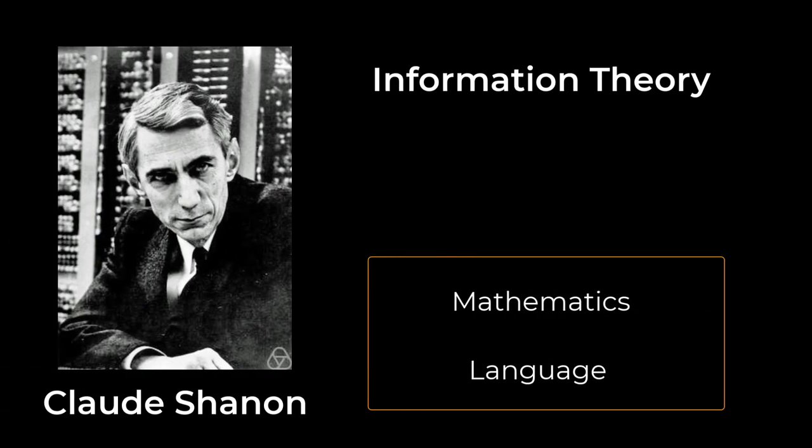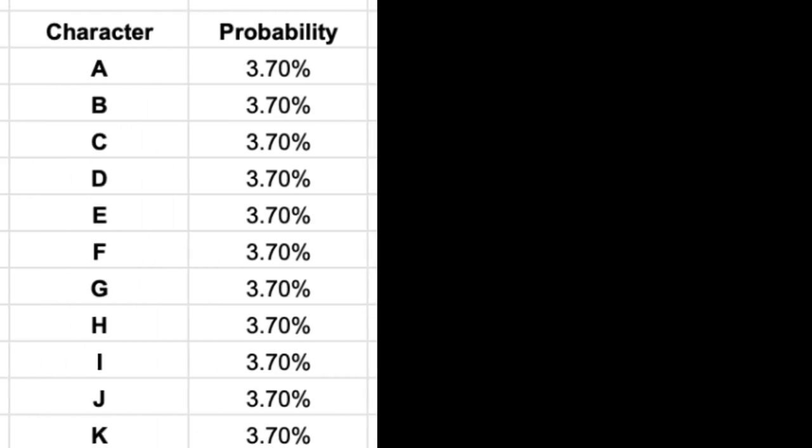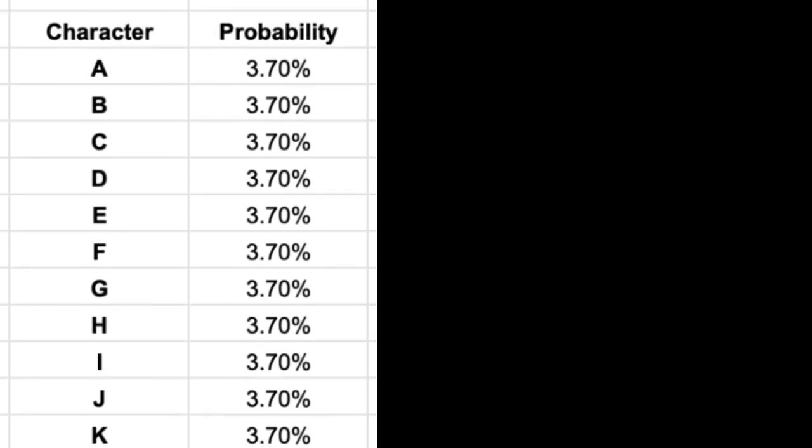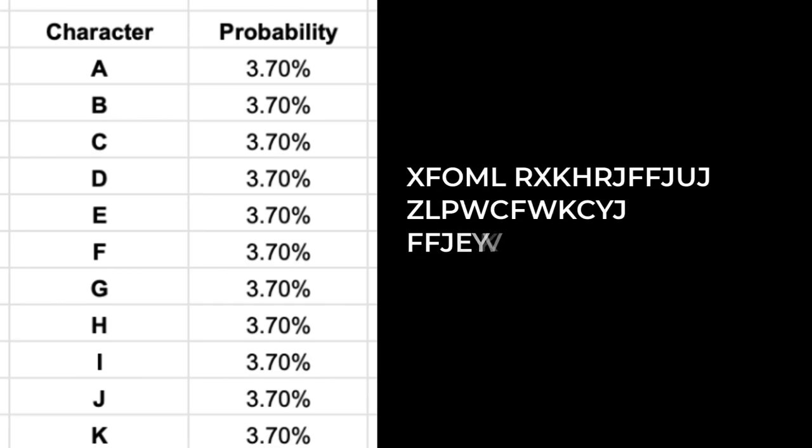In 1948, Claude Shannon introduced information theory, a way to link language and mathematics. With the English character set, let's generate a sentence one character at a time. And let's say that each character has some equal probability of appearing. We might end up with a sentence that looks like this.